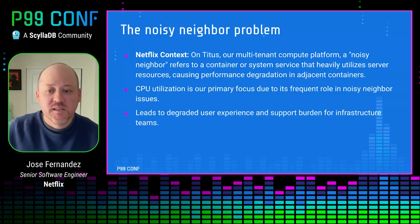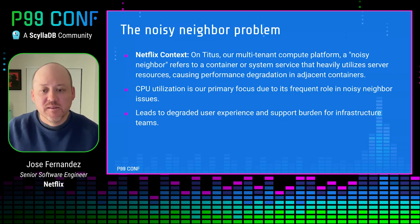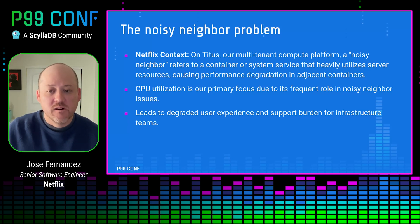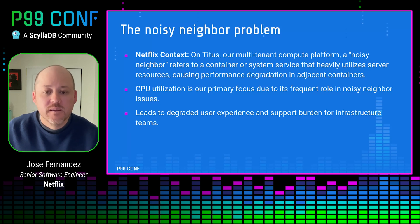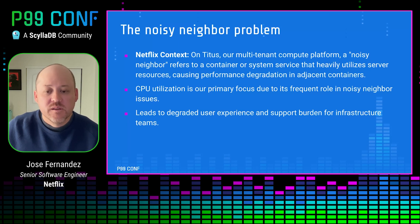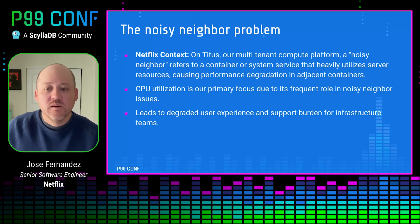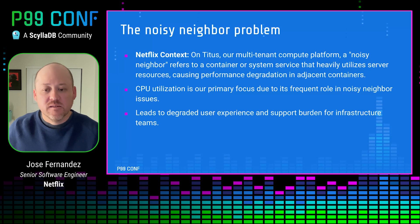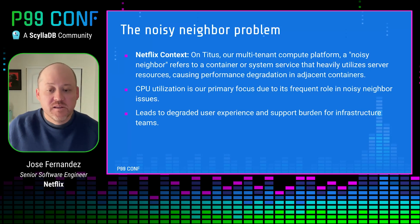The compute and performance engineering teams at Netflix frequently investigate performance issues in our multi-tenant environment. The first step is figuring out if the problem is happening at the application layer or in the underlying infrastructure. One issue that often complicates this process is the noisy neighbor problem. On Titus, our multi-tenant compute platform, a noisy neighbor refers to a container or system service that heavily utilizes the server's resources, causing performance degradation in adjacent containers. We usually focus on CPU utilization because it's our workload's most frequent source of noisy neighbor issues.